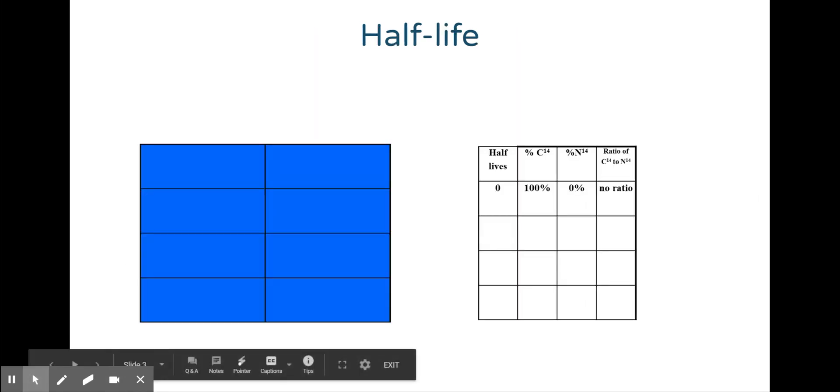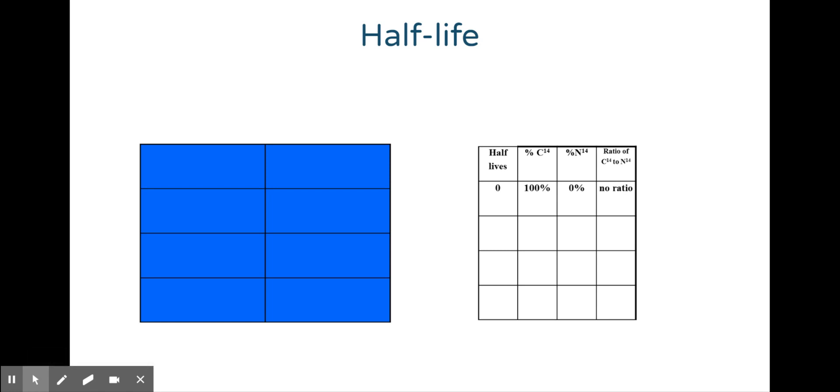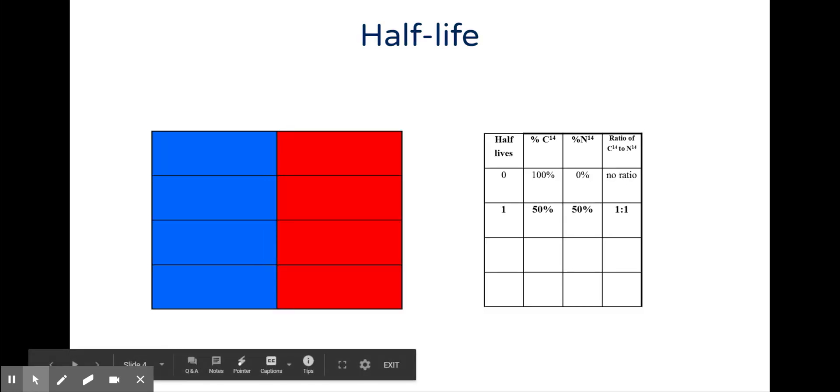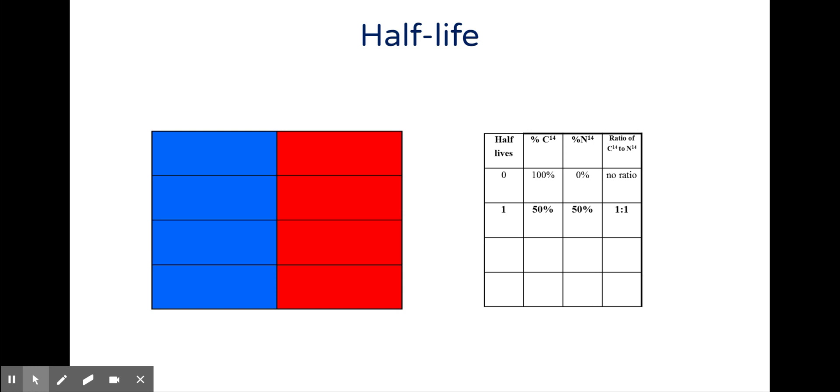Looking at my diagram, carbon-14 is at 100%. I've had zero half-lives, so I have zero nitrogen-14. After one half-life, 50% of my carbon-14 has transmutated into nitrogen-14. I have 100% of substance still there, but 50% radioactive and 50% stable isotope.